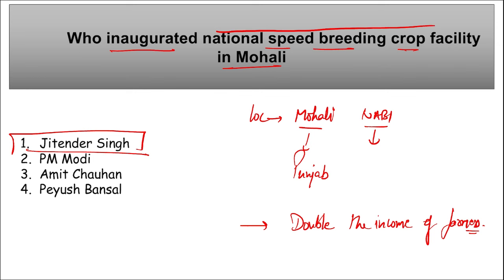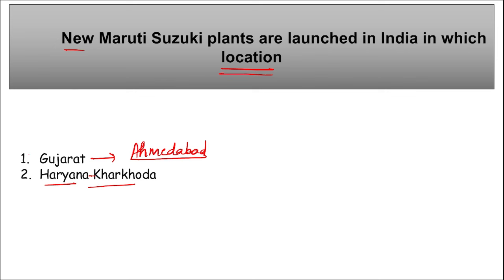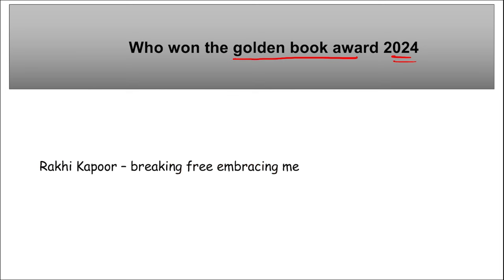New Maruti Suzuki plants are being set up: the first in Ahmedabad, Gujarat, where PM Modi virtually inaugurated India's first automobile in-plant railway siding project on 12th March; and the second in IMT Kharkhoda, Haryana.